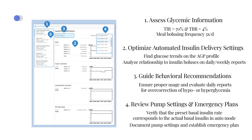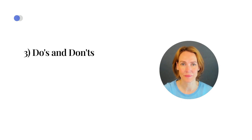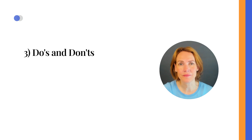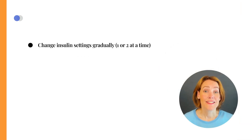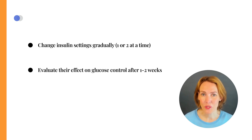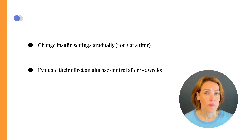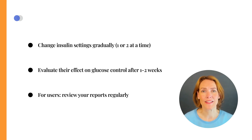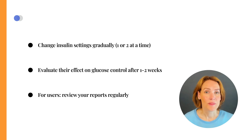Document all pump settings and establish an emergency plan including insulin pen usage in the event of a pump malfunction. Ensure that your patient has access to insulin pens. Implement changes to insulin settings gradually, one or two at a time, and evaluate their effect on glucose control after one to two weeks. Printing the summary report and noting down the goals and changes discussed during the consultation can be beneficial, helping to empower patients to better understand their data. As a user of an automated insulin delivery system, it is best to take an active role in reviewing personal reports and considering adjustments when necessary, in addition to consultations with healthcare providers.